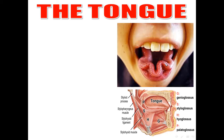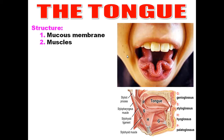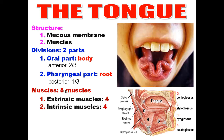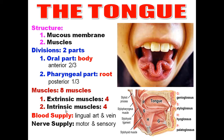Regarding the anatomy of the tongue, you should know: first, the structure — the tongue is formed of a sac of mucous membrane filled with muscles. The tongue is divided into two parts: the oral part (body), which is the anterior two-thirds, and the pharyngeal part (root), which is the posterior one-third. There are eight muscles: four extrinsic and four intrinsic. Blood supply is by the lingual artery and lingual vein, with motor and sensory nerve supply, and lymphatic drainage.